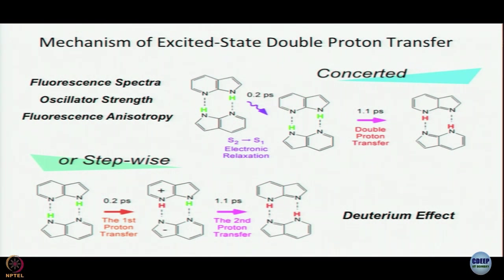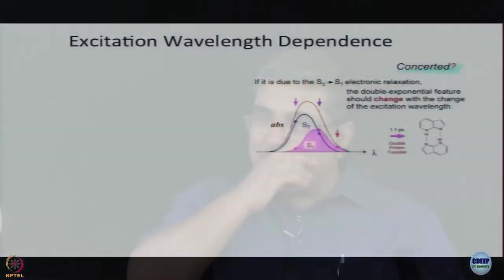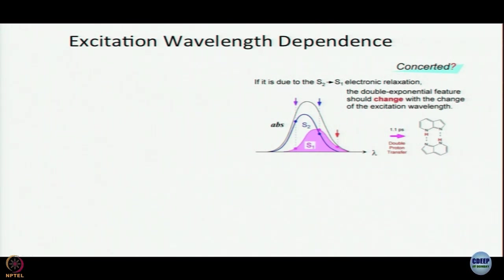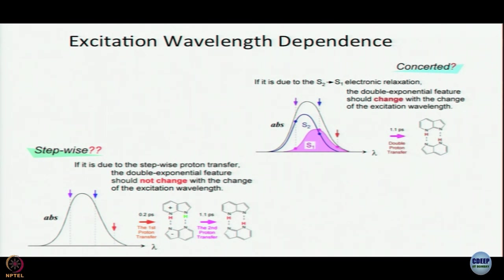Then Tahara's group did a decisive experiment. The argument was: if you excite to two different states, and if you change the excitation wavelength — where the absorption spectrum is composed of S0-to-S2 and S0-to-S1 contributions — then exciting at the blue end should preferentially excite S2 and show the 0.2 picosecond component, while exciting at the red end should excite primarily S1 and that 0.2 picosecond component should not be seen. Conversely, if there is only one state and proton transfer is sequential, no matter where you excite, you should still see both time constants — 0.2 and 1.1 picosecond. Of course, this is easier said than done.